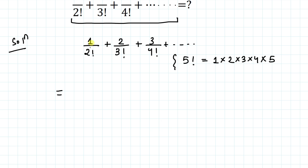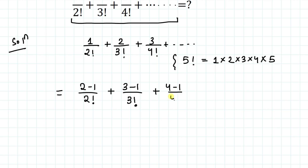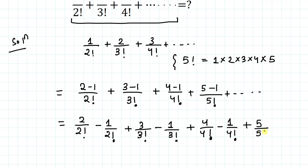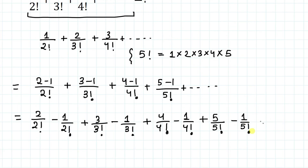In the numerator we have 1, which can be written as (2−1). So the first term becomes (2−1)/2!. Similarly, 2 = (3−1), giving (3−1)/3!. And 3 = (4−1), giving (4−1)/4!. The next term would be 4/5! = (5−1)/5!, and so on. We can then split each fraction: 2/2! − 1/2! + 3/3! − 1/3! + 4/4! − 1/4! + 5/5! − 1/5! + ...